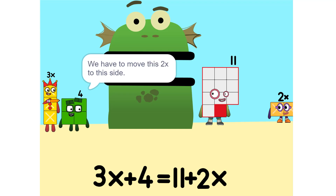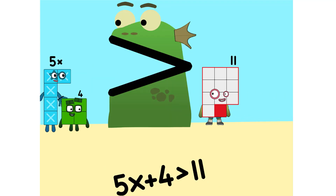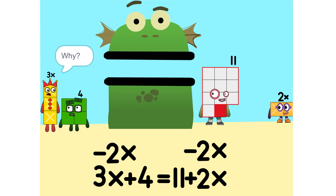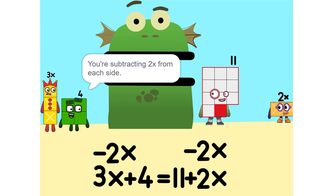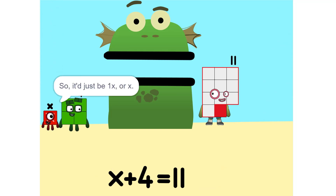We have to move this 2X to this side. Oh, so five X... five. Whenever you switch sides, you have to switch its sign. So if it's positive, it becomes negative — and vice versa. Why? Think of it this way: you're subtracting 2X from each side. Oh, so it's just one X, or X.